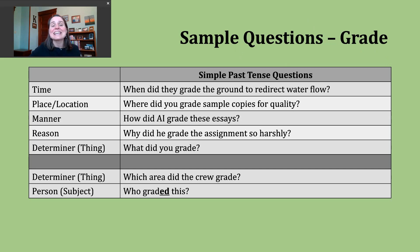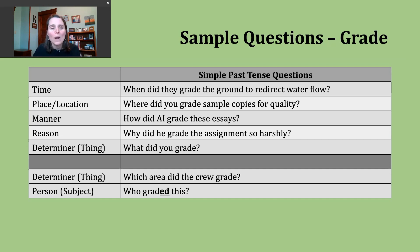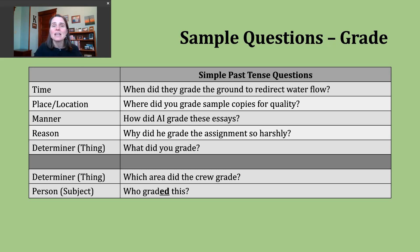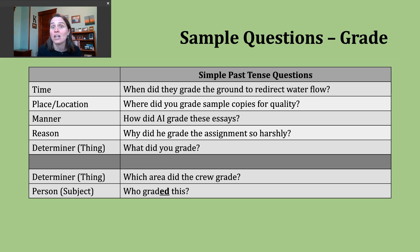The first type of question we're going to ask is a question about time — this could be a date or a time on a clock. For that, we use the question word when, W-H-E-N. Following our pattern, a sample question is: 'When did they grade the ground to redirect water flow?' This asks about a specific time in the past when this action was completed — referring back to our last definition, changing the slope of the ground, maybe to push water away from something or prevent flooding.